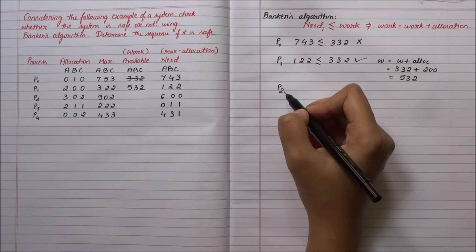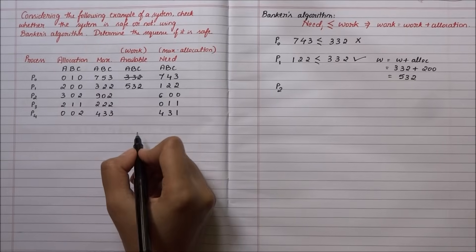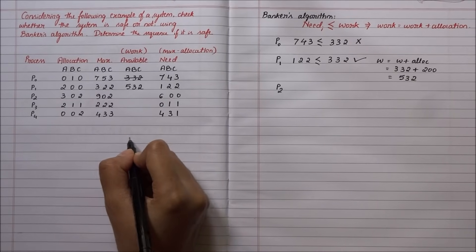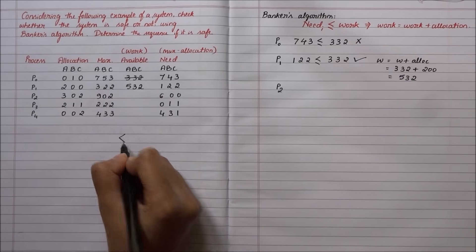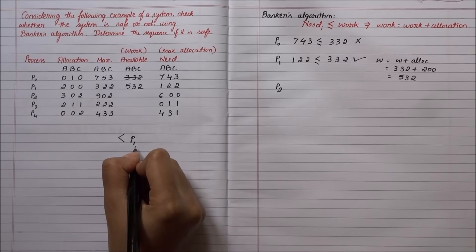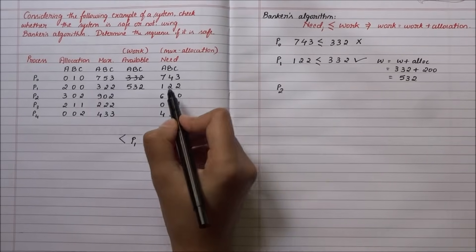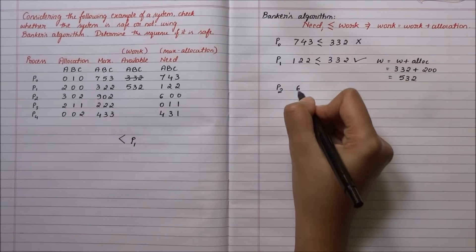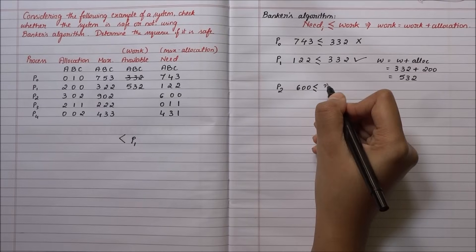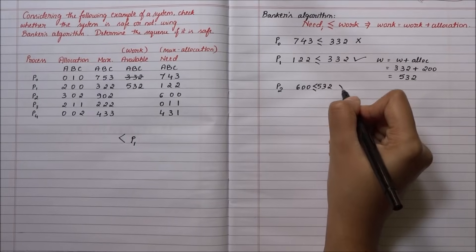Before going to the next process, we need to keep track of a safe sequence. P1 has just entered the safe sequence. Let me go for P2. The need of P2 is 6-0-0, less than or equal to the new work 5-3-2. This is false.